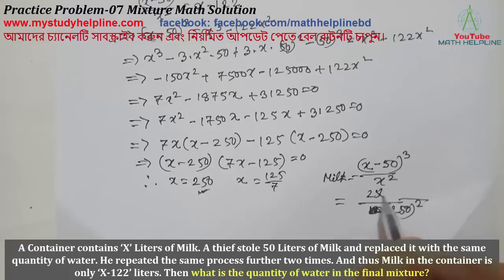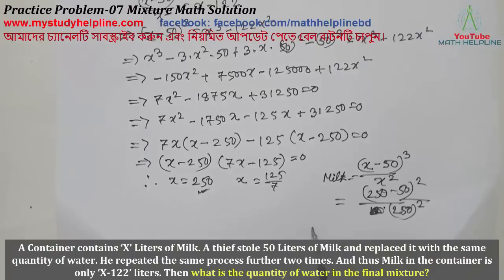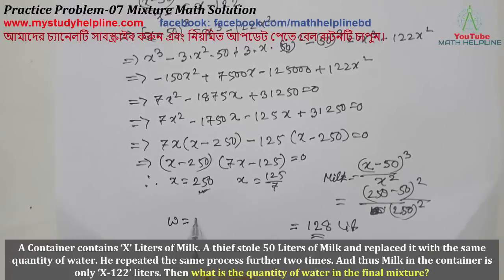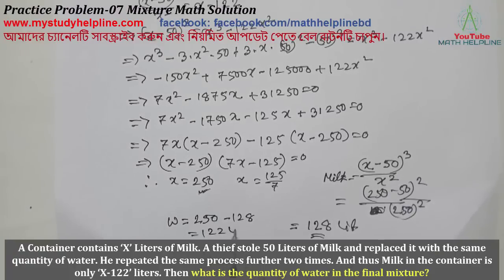With x = 250: 250 - 50² calculation gives 128. This is the milk quantity. The total is 250. So the water quantity is 250 - 128 = 122 liters.